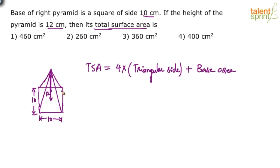To find the area of the triangular face, recall that the area of any triangle is half times base times height. The base of each triangle is 10. But what is the height? Don't take 12 as the height — the height of the pyramid is not the height of the triangular face. The height of the triangle is this slant height.